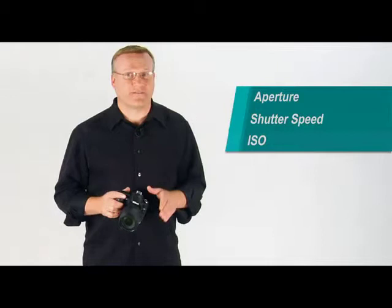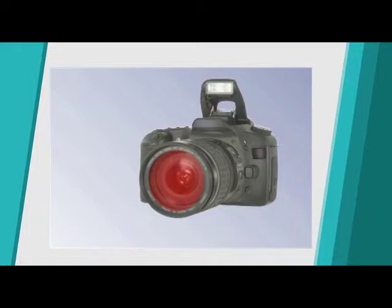Let's talk a little about your camera. A camera is a light-proof box designed to capture and record light. Let's first go over how your camera captures light. Most digital cameras are made up of four main parts. These parts are the lens, aperture, shutter, and image sensor.